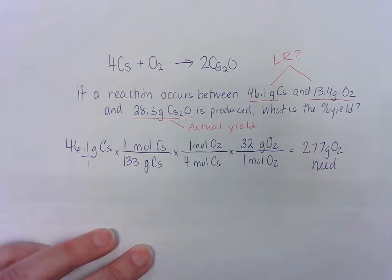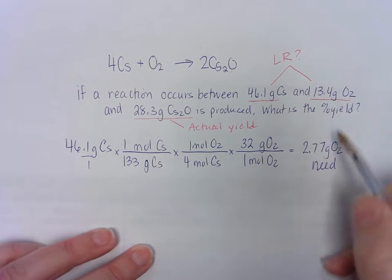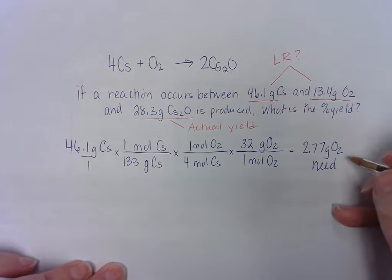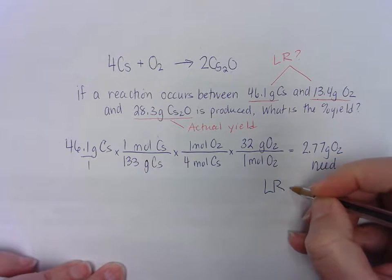Now remember, up here is how much you have. So I need 2.77 grams, but I have 13.4 grams. So I have plenty of this. That means that the limiting reactant is the cesium.